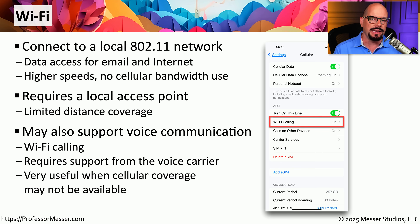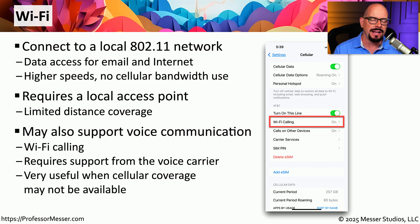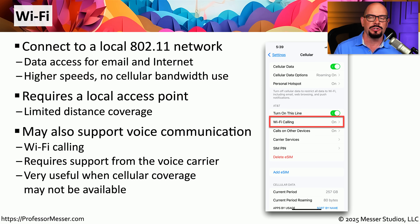This Wi-Fi functionality enables voice, video, data, and almost any other type of data transfer. Many mobile phones allow you to communicate voice over the 802.11 network. So if you're in an area where your 4G or 5G network doesn't have very good signal, you could use that phone over your Wi-Fi network, allowing you to receive and send calls just as if you were connected to a 4G or 5G network.